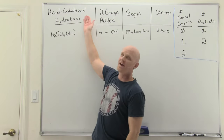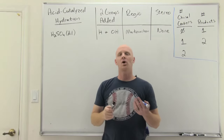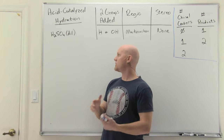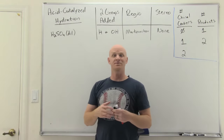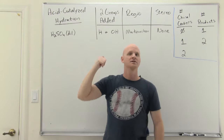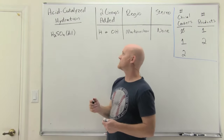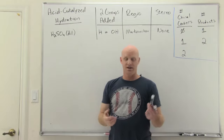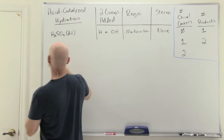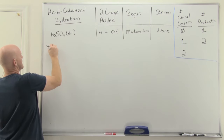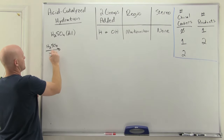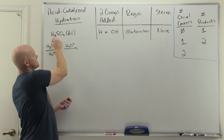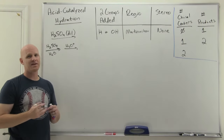The first reaction is acid-catalyzed hydration — called hydration because we add water across the alkene, adding H and OH. Water and alkenes don't react well together since water is not a great electrophile, but adding acid gives a much better electrophile, H3O+. The reagent is dilute H2SO4, sometimes written as H2SO4 with water, or simply H3O+. All three representations mean the same thing: acid-catalyzed hydration.